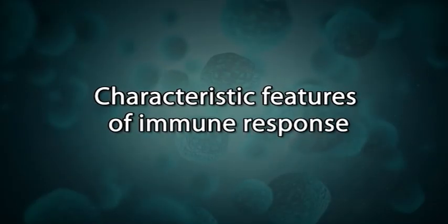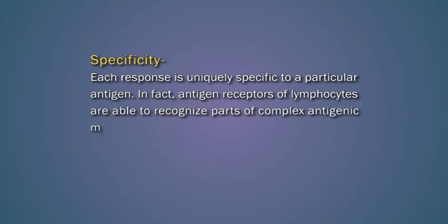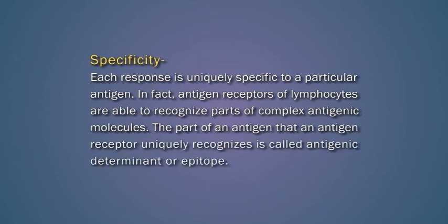Now, the characteristic features of immune response. The first one is specificity. Each response is uniquely specific to a particular antigen. In fact, antigen receptors of lymphocytes are able to recognize parts of complex antigenic molecules. The part of an antigen that an antigen receptor uniquely recognizes is called an antigenic determinant or epitope.